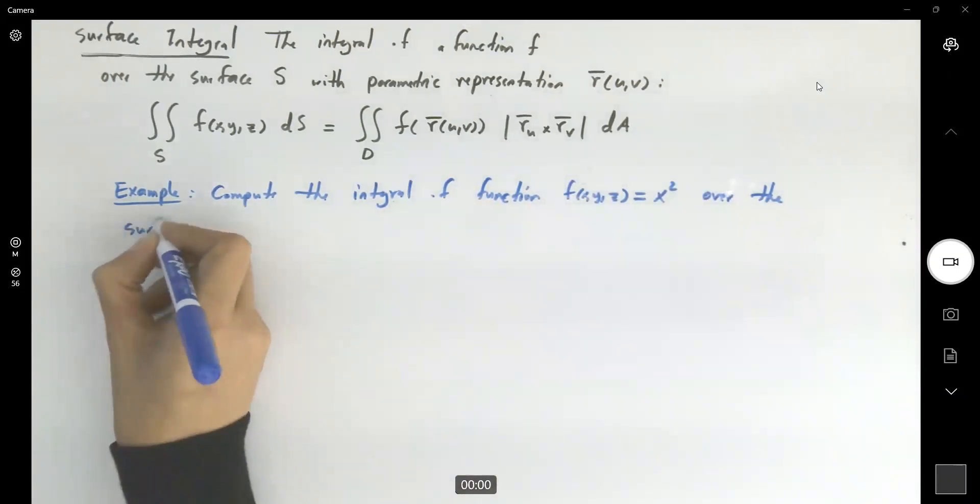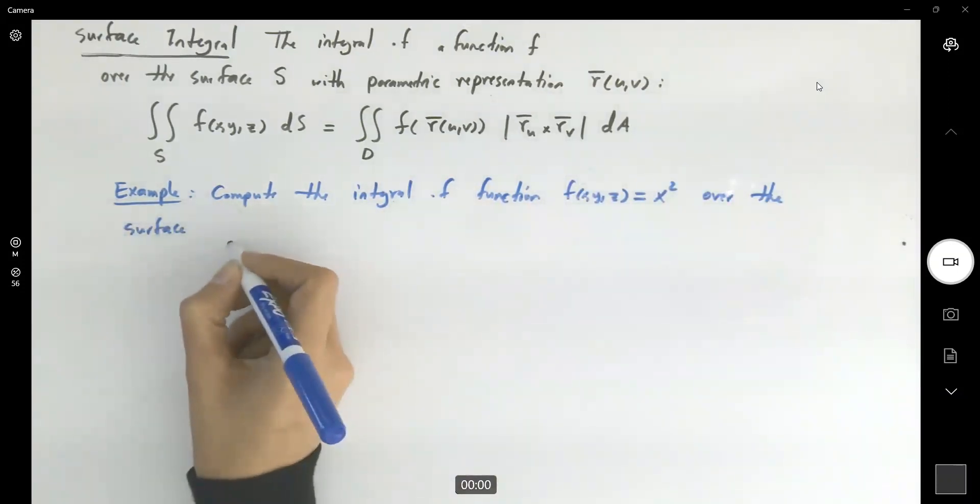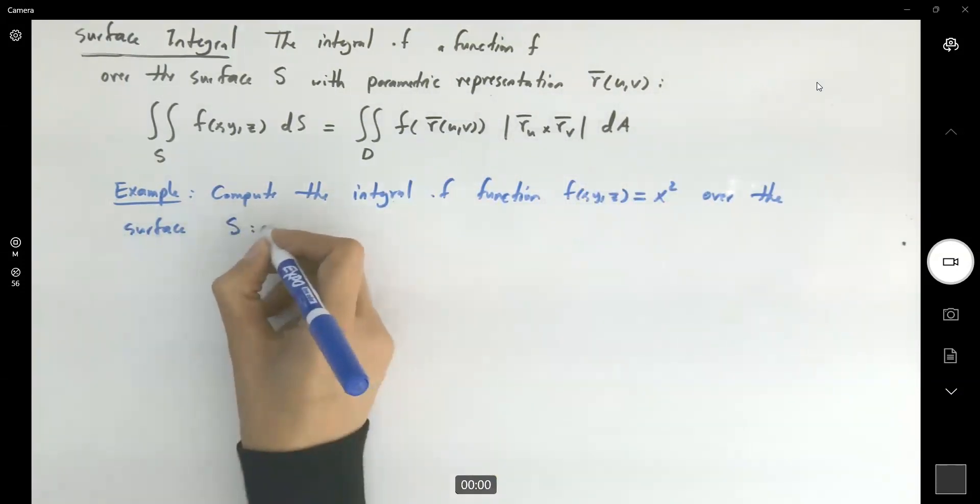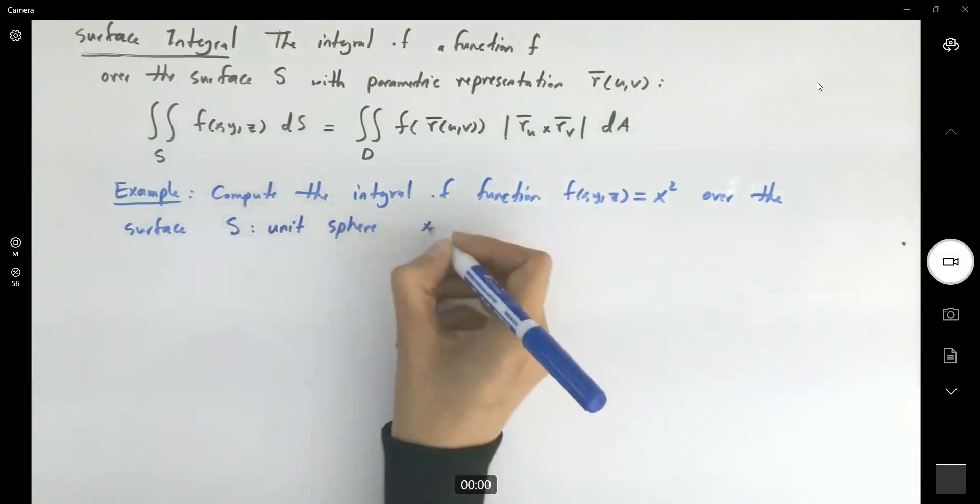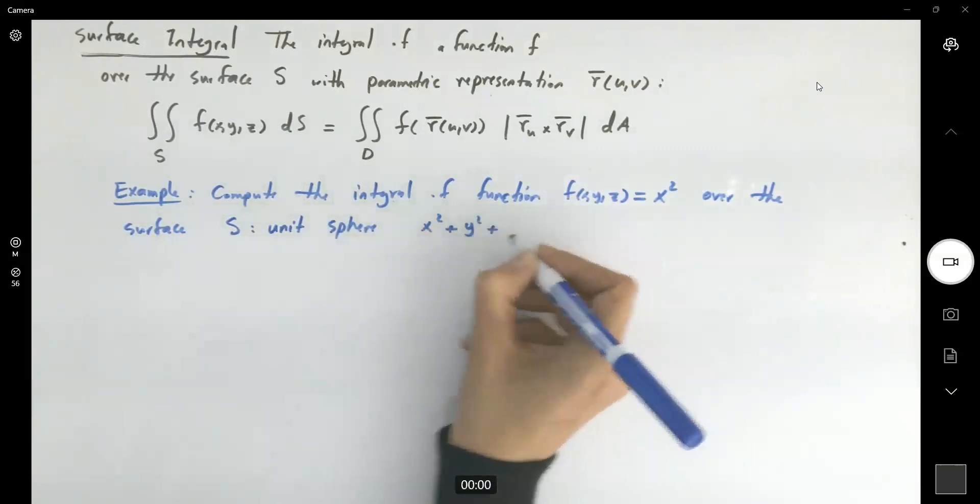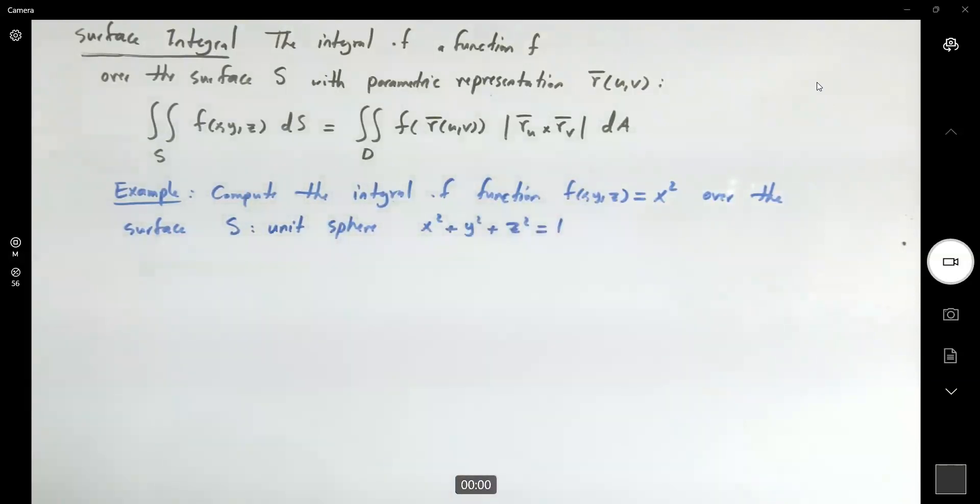over the surface S which is unit sphere x² + y² + z² = 1.